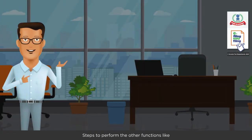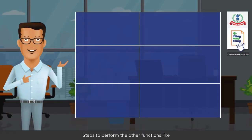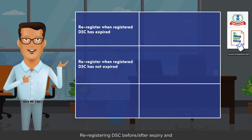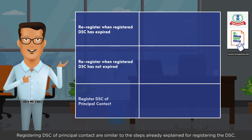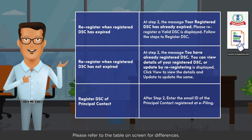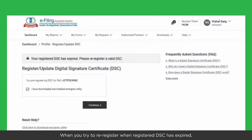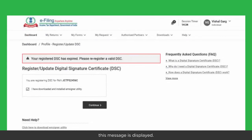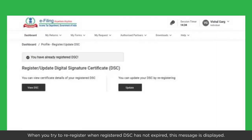Steps to perform other functions — such as re-registering DSC before and after expiry, and registering the DSC of a principal contact — are similar to the steps already explained for registering the DSC. Please refer to the table on screen for differences.